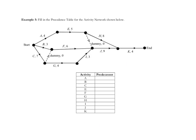Now filling in the table from the network: A, B, C have no predecessors. E has A before it. F has B — and because of the dummy, C also has to occur before F, so B and C. G has just C. H has E. I has just G. J has E, F, and I — the dummy lets E happen as well. K has J and H.